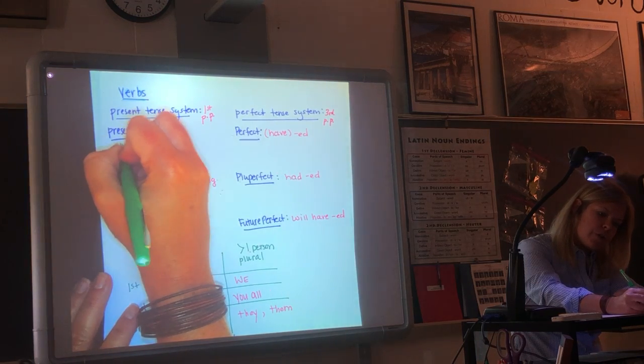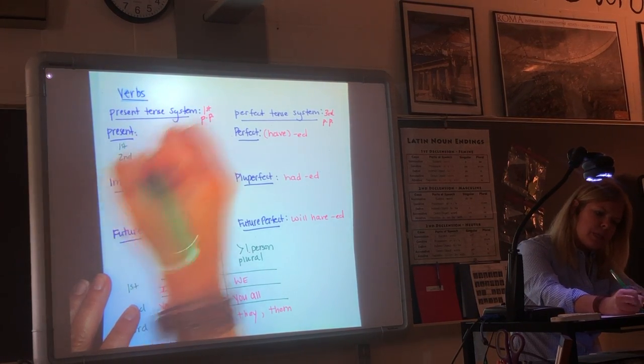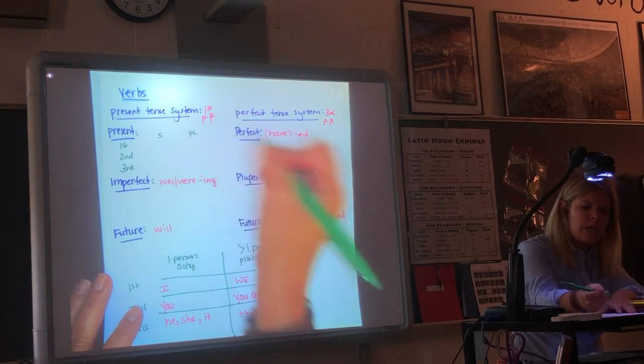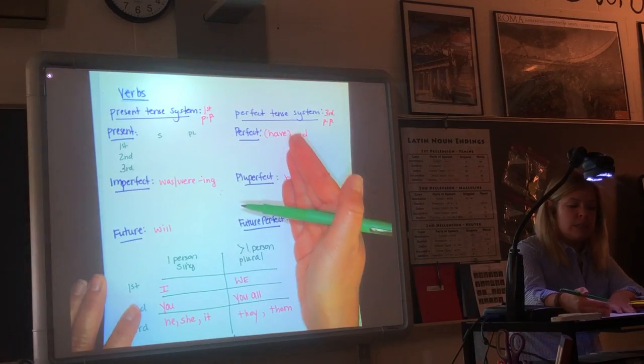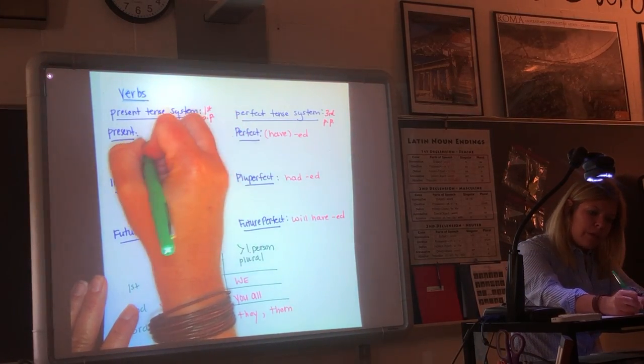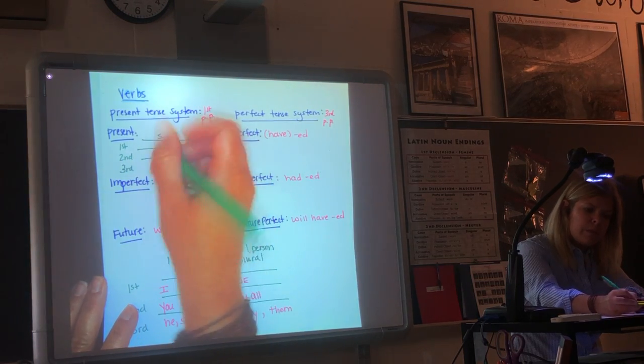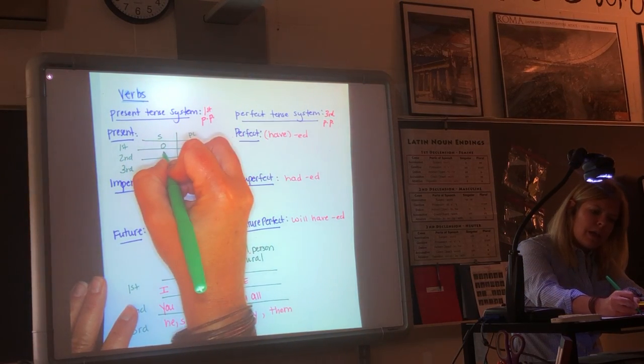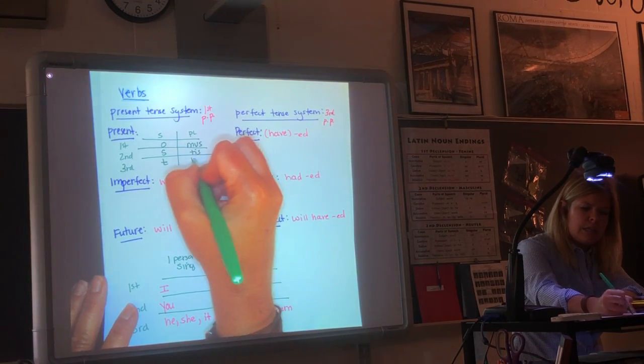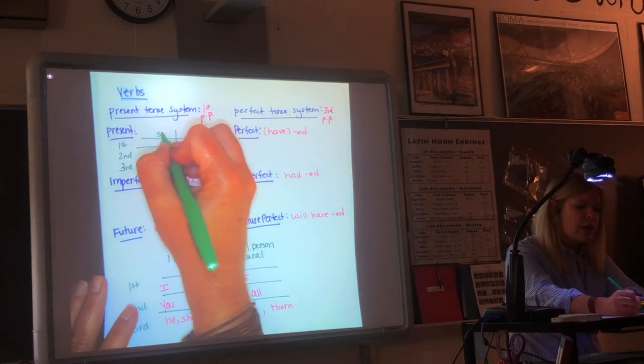Present. Remember, we have our chart. Our first person, second person, third person. You have your singular side. You have your plural side. That chart goes with all boxes. I won't draw the chart probably for every single box. It's a little tedious. Right? Present: -o, -s, -t, -mus, -tis, -nt. We sing it to that Mickey Mouse song. O-s-t-m-u-s-t-i-s-n-t.